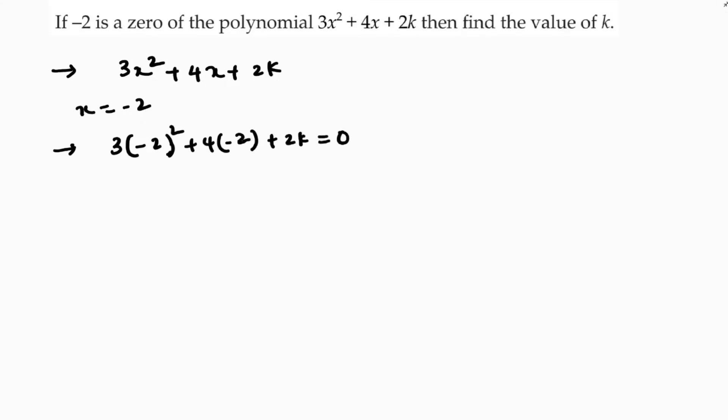I will write equal to 0 because minus 2 is a zero of the polynomial. If you substitute minus 2 in place of x, then the value of the polynomial is 0.